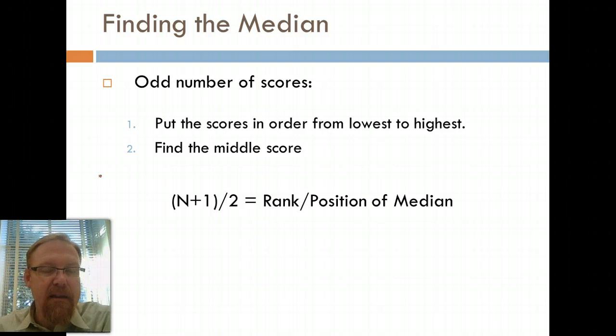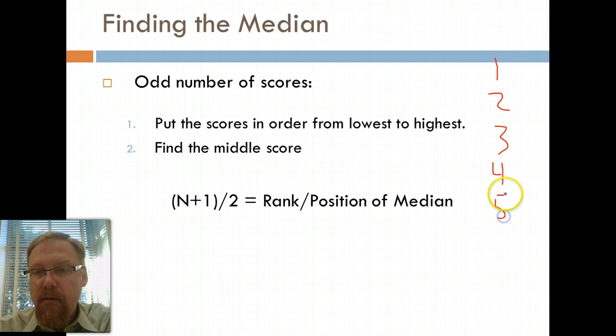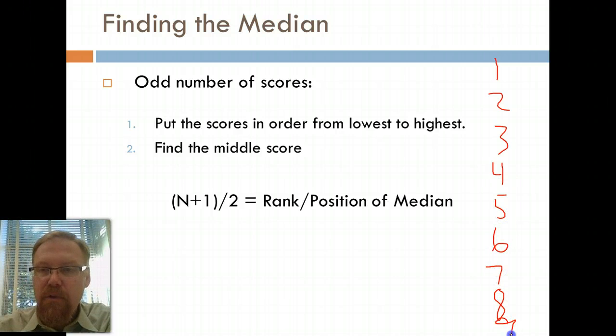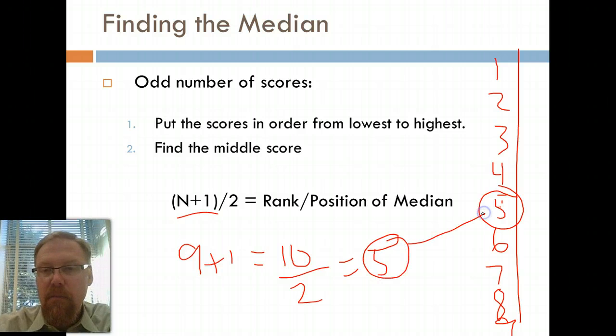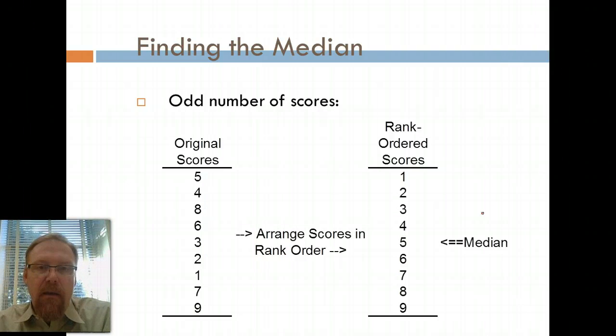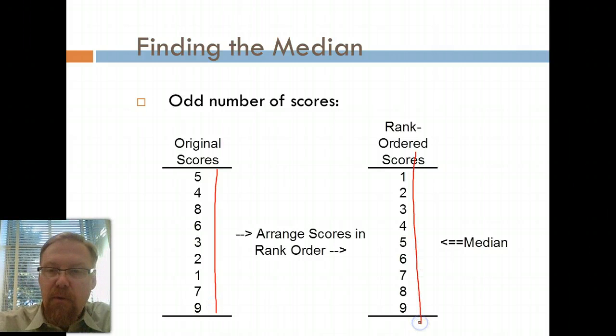If you want to find the median, you simply could put the numbers in order and then just look at the middle one. There it is. There's one, two, three, four, five. And then if you count it from the bottom, one, two, three, four, five. So we have five either way you come in at it. Or you could put the scores in order from lowest to highest, find the middle score like I just did. You could also do this little trick: N plus one divided by two gives you the rank or the position of the median. So in my example here, it would be nine plus one, which is ten, divided by two equals five. Lo and behold, there it is. If you have an odd number of scores, here are your original scores, rank order the scores, and there's your median.